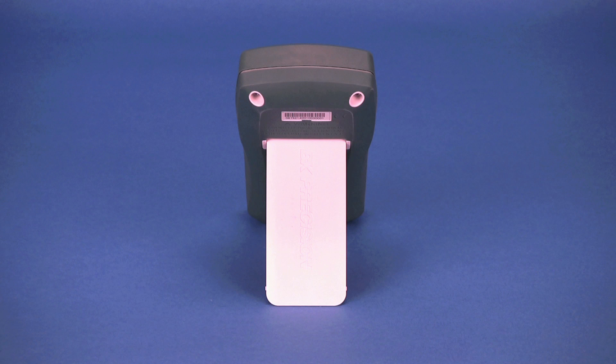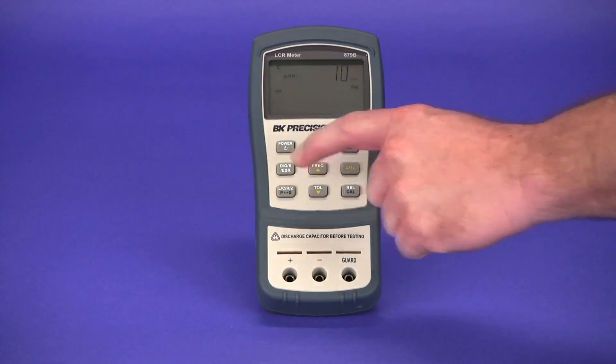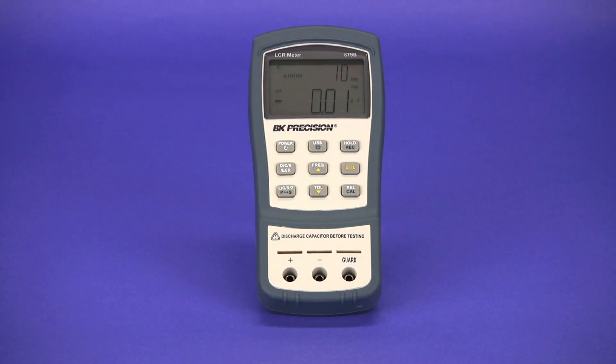The back of the meter has a convenient tilt stand that securely holds the meter upright when being used during bench applications. Even when interfacing with the meter by pressing any of the function buttons, the meter's tilt stand holds the meter upright.